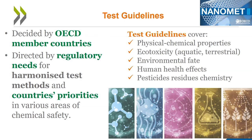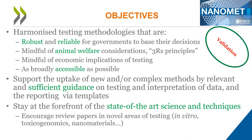In the case of nanomaterials, it became obvious that their specificity required that in some cases amendments were needed to existing test guidelines, and in others, new test guidelines specific to nanomaterials needed to be developed. What we want to achieve for all chemicals, including nanomaterials, is harmonized testing methodologies that are robust and reliable for governments to base their decisions on, mindful of animal welfare considerations and the three R principles, mindful of economic implications of testing, and broadly accessible. A major feature of test guidelines that ensures regulatory acceptance is that the test is validated — meaning it is reliable and repeatable. The proposed method needs to have demonstrated relevance and reliability through intra- and inter-laboratory studies, with demonstrated applications and limitations.